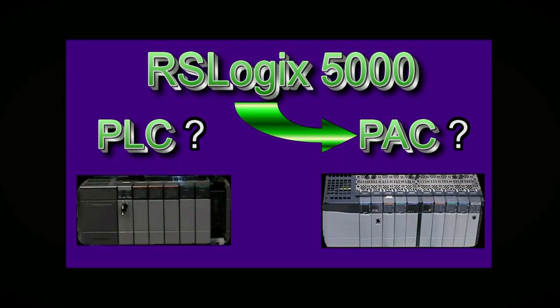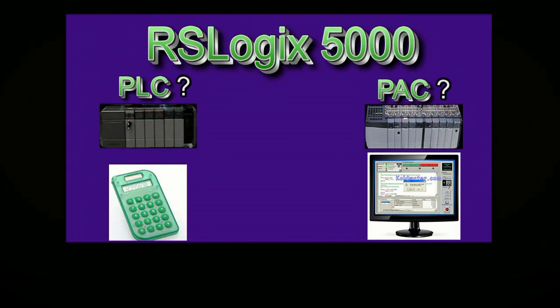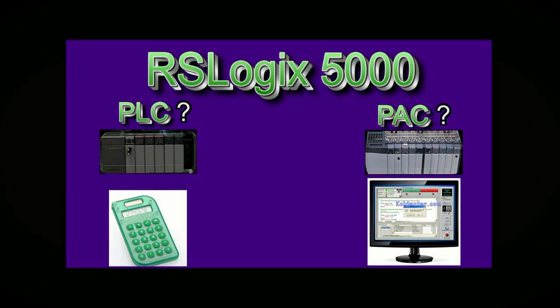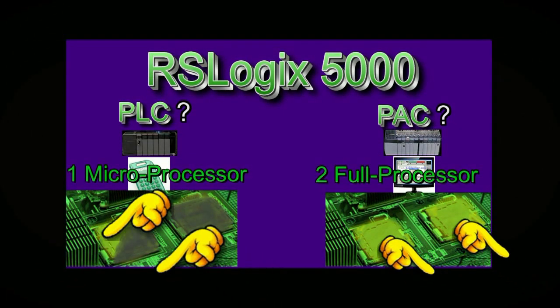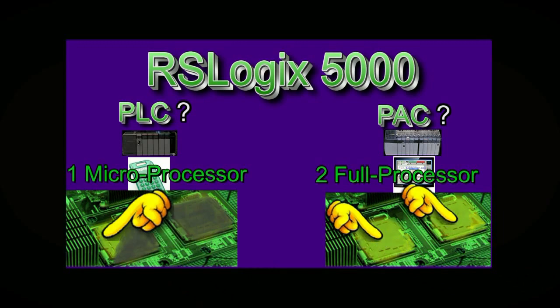RSLogix 5000 is the software required to work with Rockwell's brand of PACs. A PLC compared to a PAC is like a calculator compared to a computer — literally — as both a calculator and a PLC have a single scan cycle and can run just on a microprocessor, whereas a computer and a PAC require multiple full processors so they can multitask.